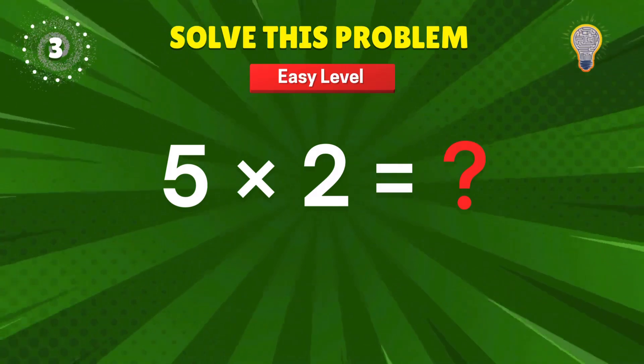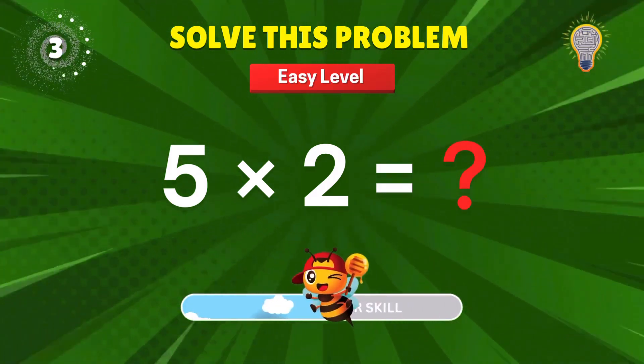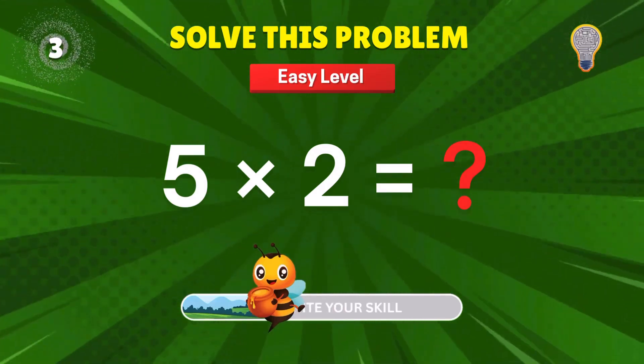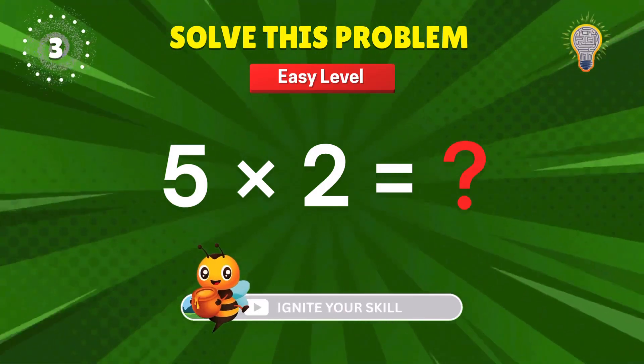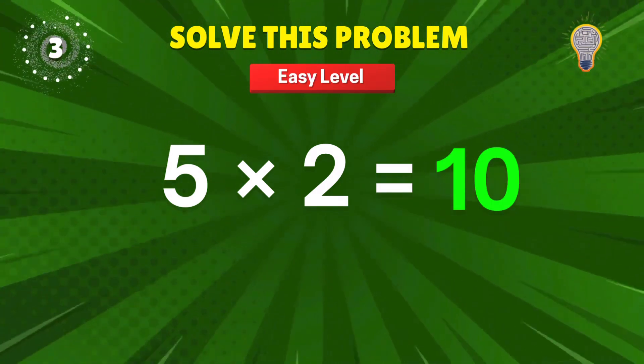5 times 2? That's like buying 2 packs of 5 cookies each. 10. Tasty math. Plus 1 point for your cookie jar.